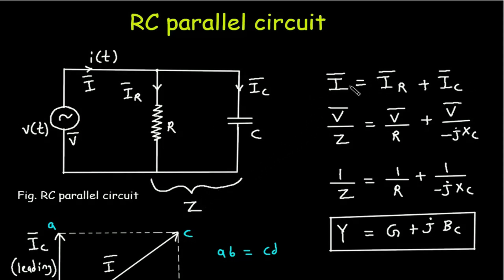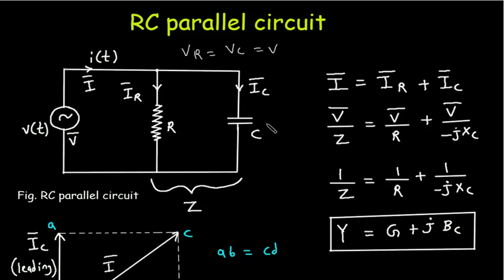From this equation we can say that I is equal to V by Z. IR is equal to VR by R, but VR is equal to VC is equal to V. So here we can write V divided by R, plus IC is VC divided by minus j·XC. So in place of VC we can write V divided by minus j·XC, where XC is the capacitive reactance, and 1 by minus j represents that the current is leading in the capacitor.